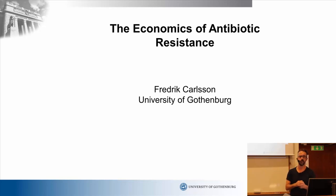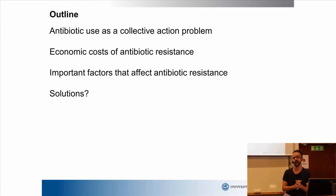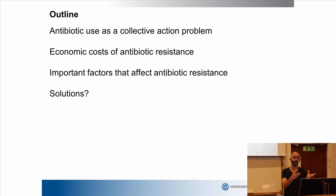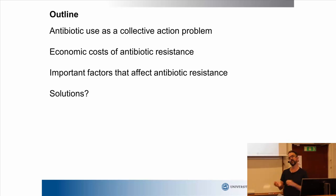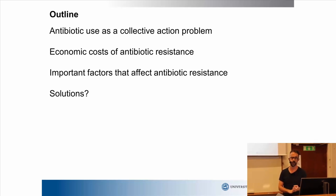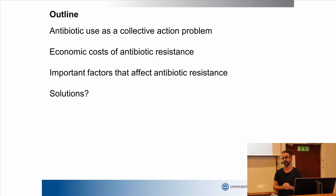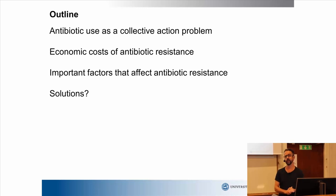I've heard that you have a number of very specific questions, and we'll try to handle those as well. These four things are basically what I'm going to talk about: introducing antibiotic use and antibiotic resistance as a social science problem — I'm going to call it a collective action problem — then the economic costs of antibiotic resistance, factors that affect the use of antibiotics and the development of resistance, and finally solutions in terms of policies to affect the use of antibiotics.